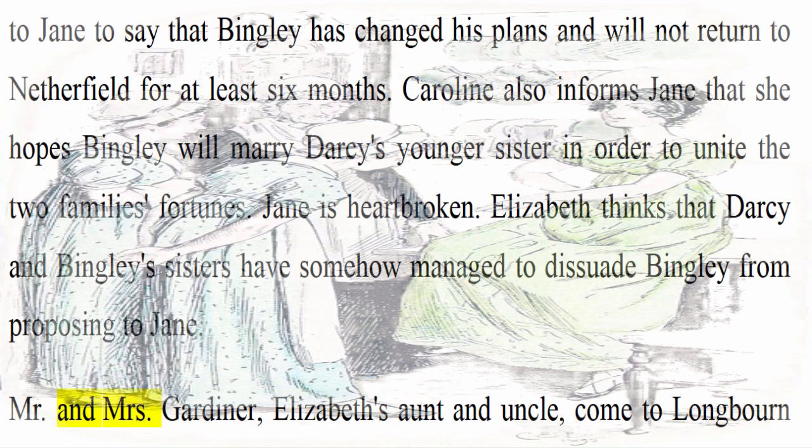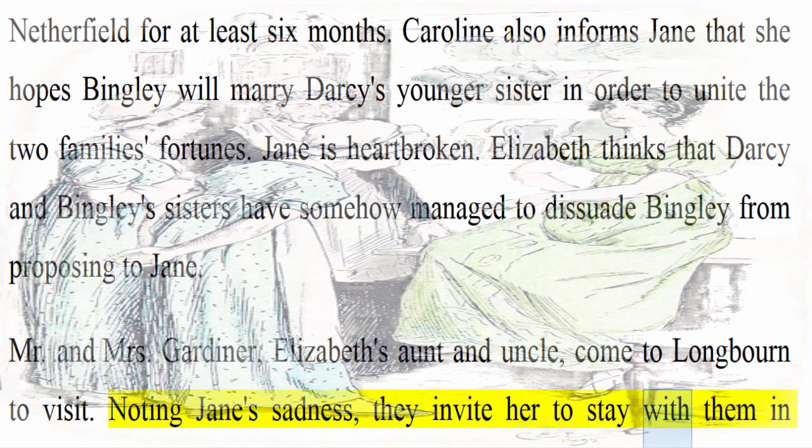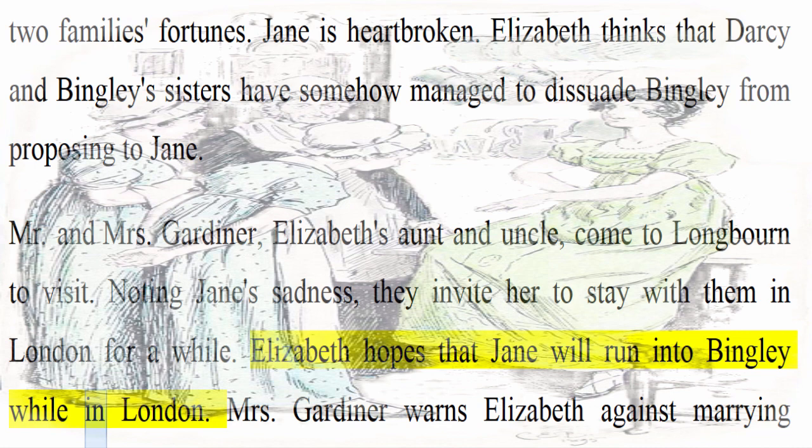Mr. and Mrs. Gardiner, Elizabeth's aunt and uncle, come to Longbourn to visit. Noting Jane's sadness, they invite her to stay with them in London for a while. Elizabeth hopes that Jane will run into Bingley while in London. Mrs. Gardiner warns Elizabeth against marrying Wickham because of his poor financial situation.